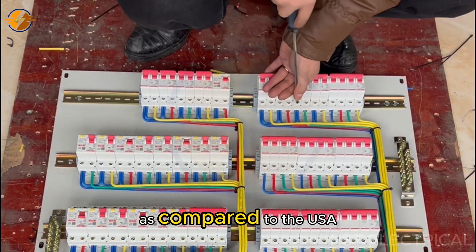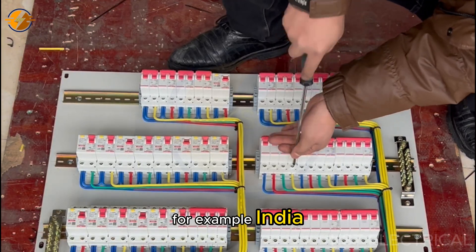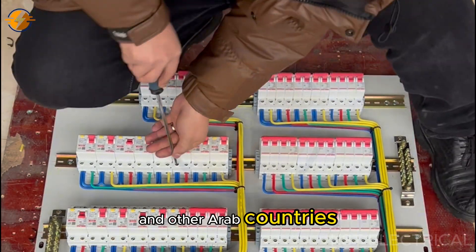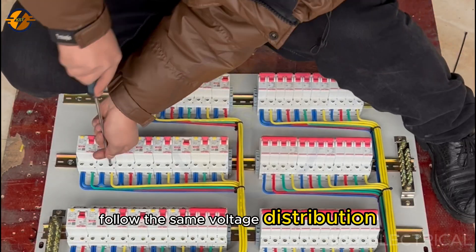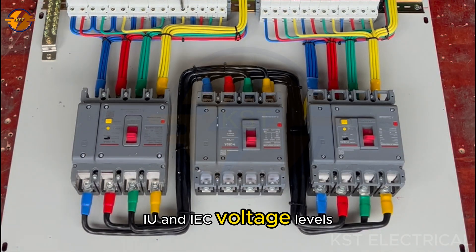The three-phase system is simpler in the UK and EU as compared to the USA, and most countries, for example India, Pakistan, UAE, and other Arab countries, follow the same voltage distribution system as UK, EU, and IEC voltage levels.